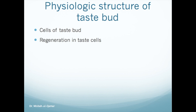Looking at the physiologic structure of a taste bud: it is basically a bundle of taste receptor cells whose supporting cells are embedded in the covering of papillae. The cells of a taste bud are divided into four groups — type 1, 2, 3, and type 4.